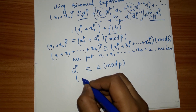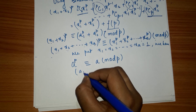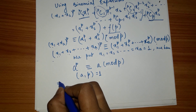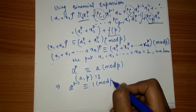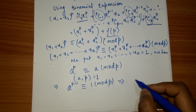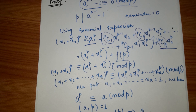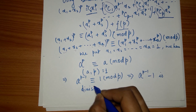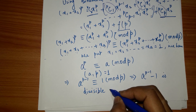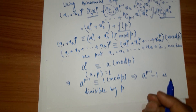Since we are given that gcd(a, p) = 1, we can divide both sides by a, giving a^(p−1) ≡ 1 (mod p). Subtracting 1 from both sides, a^(p−1) − 1 ≡ 0 (mod p), which means a^(p−1) − 1 is divisible by p. This completes the proof of Fermat's Little Theorem.